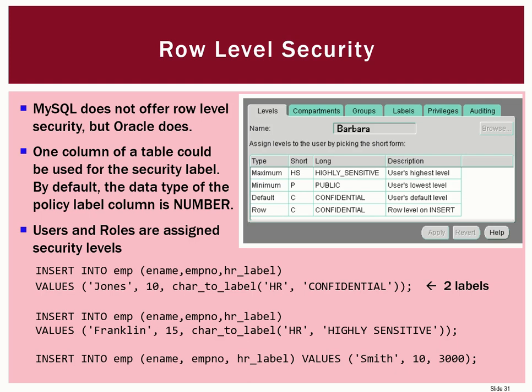As you can see in this diagram, Barbara is set up so that the most confidential she can be would be to deal with highly sensitive information — that's her highest security level. The minimum level that Barbara can work at is public, the lowest possible level. So Barbara has a pretty wide range: she can enter public information all the way up to highly sensitive. But her default is confidential, meaning that if we don't specify when inserting information into tables with row-level security, records for Barbara will default to confidential.